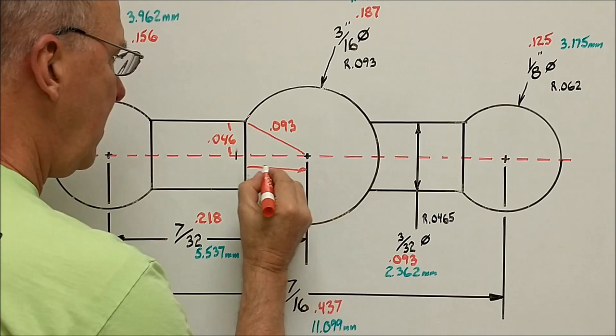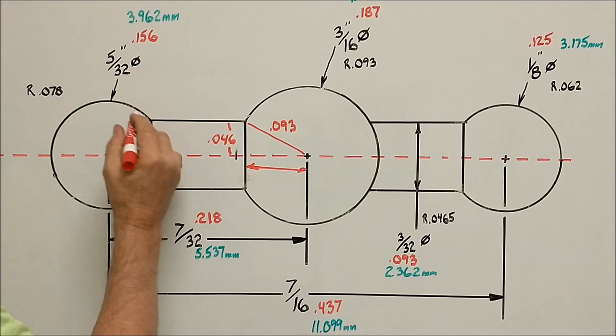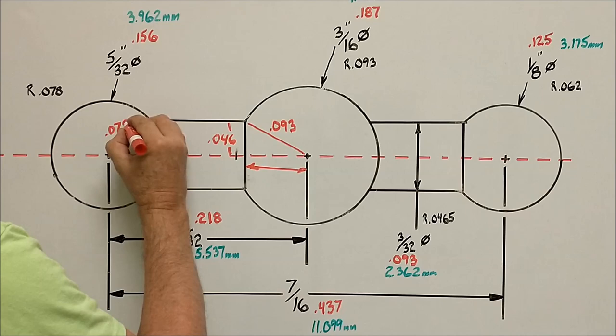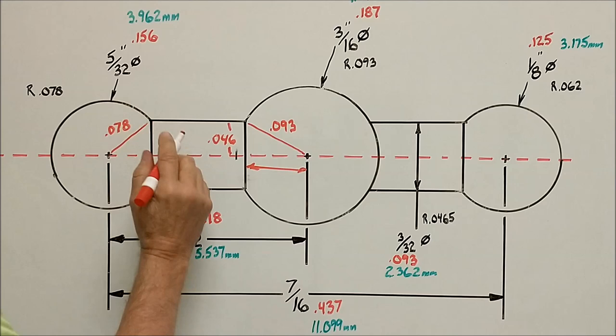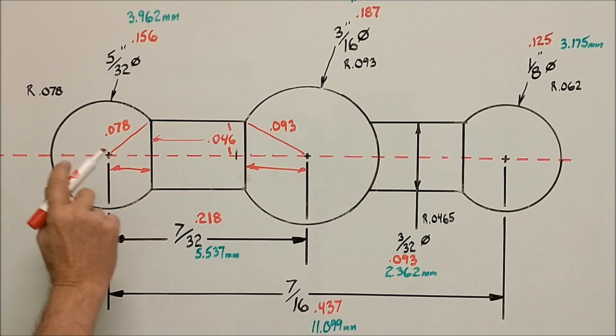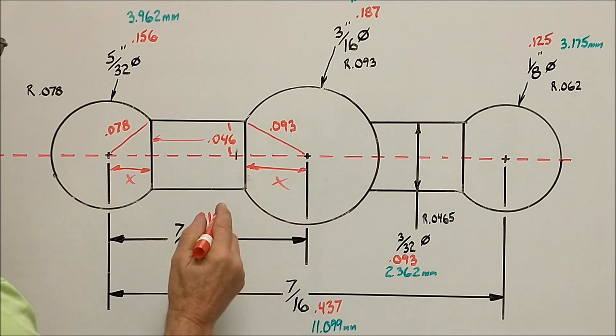Same thing on this one. Radius 0.078, it's a 5/32nds or 0.156 diameter. The 0.078 is right here, 0.046 is the same centerline coming across. It will allow you to calculate this. As soon as you have this one and this one, add them up, subtract them from the center to center, and that will give you this.